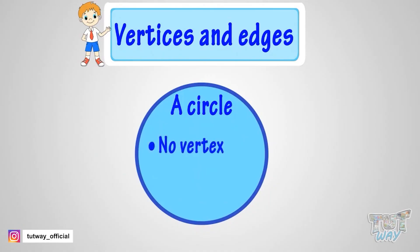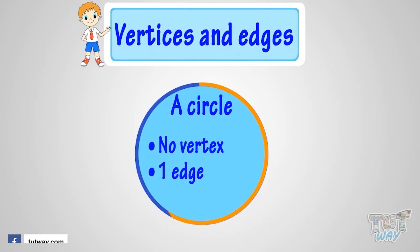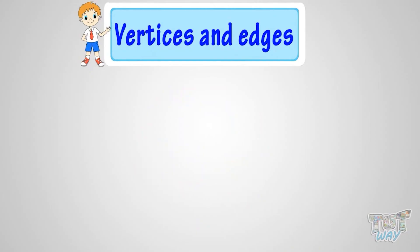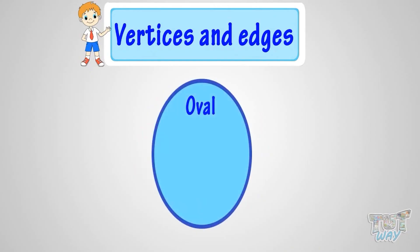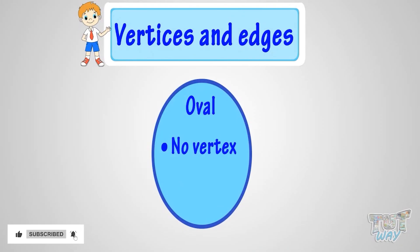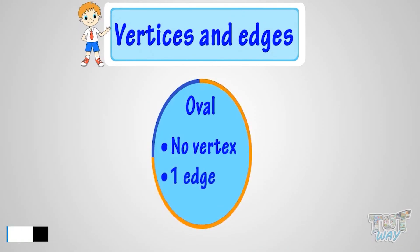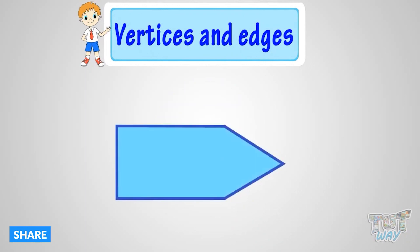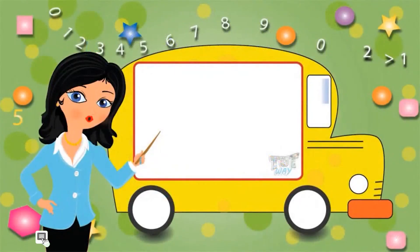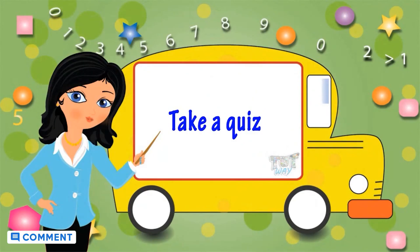So what we learn here: a circle or any round shape has no vertex and only one edge which is a continuous line that does not end anywhere. Oval is another shape that does not have any vertices and only one edge. So kids, today we learned what are vertices and edges. Now you may go ahead and take a quiz to learn more. Bye-bye!